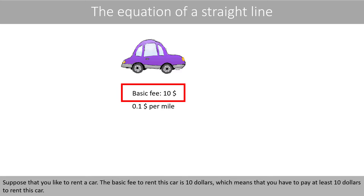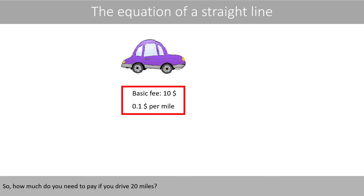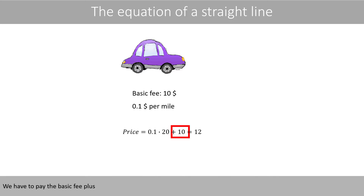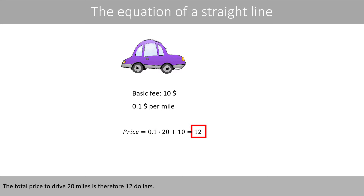Suppose that you like to rent a car. The basic fee to rent this car is $10, which means that you have to pay at least $10. Then for every mile you drive, you have to pay $0.10 per mile. So how much do you need to pay if you drive 20 miles? We have to pay the basic fee plus the cost of driving 20 miles, which will cost us $2 because 0.1 times 20 is 2. The total price to drive 20 miles is therefore $12.